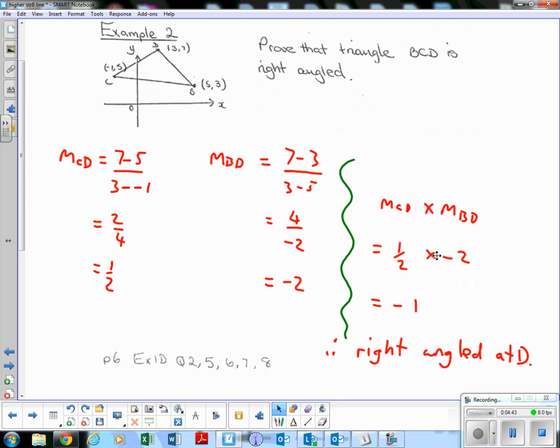Let's multiply those together. A half times negative 2 is negative 1. So as the product of the gradients is negative 1, that means that the triangle is right angled at D.